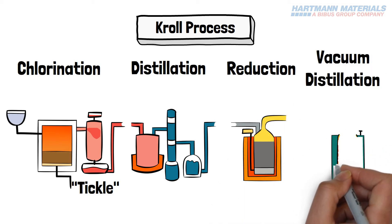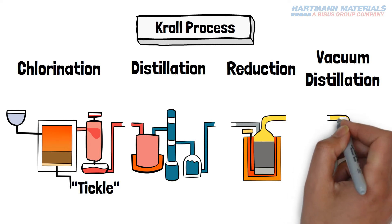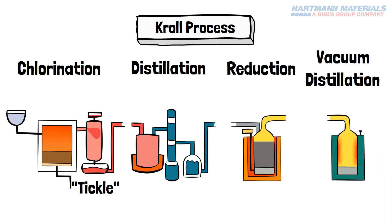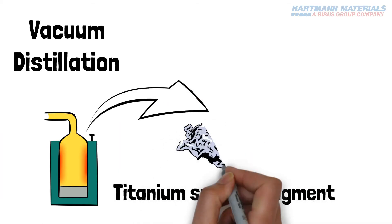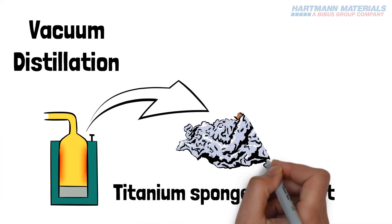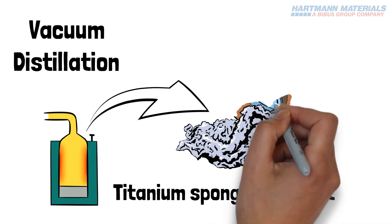The product of this reaction is pure titanium plus magnesium chloride, which is then extracted by vacuum distillation, leaving behind a porous pure titanium sponge. The sponge is not in usable condition and requires further processing.